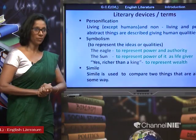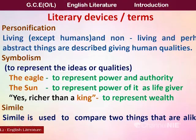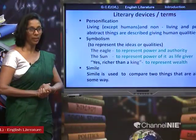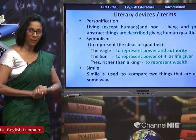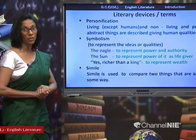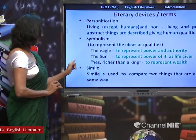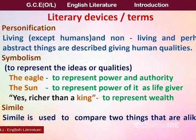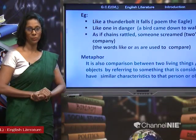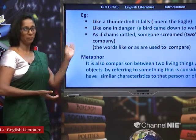Symbolism: to represent ideas or qualities. The eagle represents power and authority. The sun represents the life-giver — without the sun, none of the things in the world will be there, so it represents supreme power. In the poem 'Richard Cory,' you find 'richer than a king' — the word king is a symbol here. When we hear the word king, we know the power and wealth the king has, so 'richer than a king' conveys how wealthy Richard Cory was. Then simile — note the spelling: S-I-M-I-L-E, pronounced 'simile.' A simile is used to compare two things that are alike in some way. Example: 'like a thunderbolt it falls' — the speed of the eagle and the speed of the thunderbolt are compared using the word 'like.'